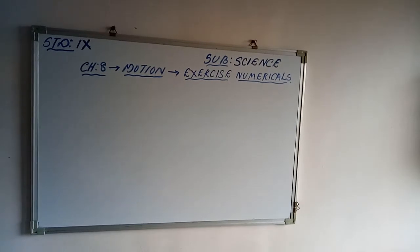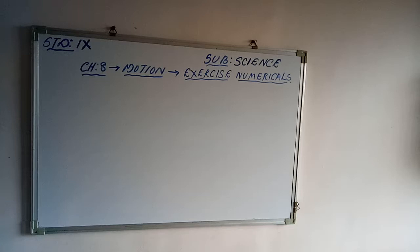See the second question. Joseph jogs from one end A to the other end B of a straight 300-meter road in 2 minutes 30 seconds, and then turns around and jogs 100 meters back to point C in another 1 minute. What are Joseph's average speeds and velocities — first from A to B, and second from A to C?